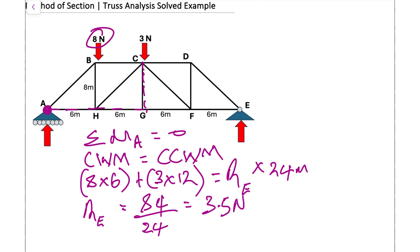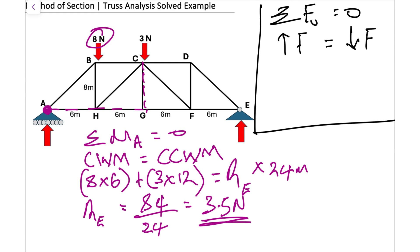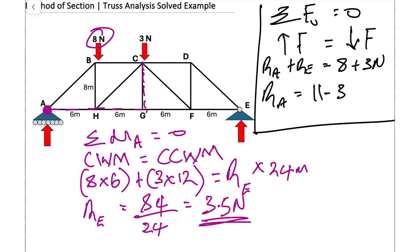RE equals 8×6 (48) plus 3×12 (36), divided by 24, giving RE = 3.5 newtons. To find the reaction at A, we apply the sum of vertical forces equals zero: forces going up (RA + RE) equal forces going down (8 + 3 = 11 newtons). So RA = 11 − 3.5 = 7.5 newtons.